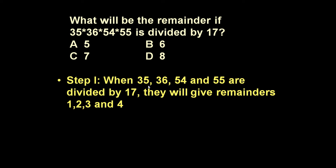When 35, 36, 54 and 55 are divided by 17 they will give remainders equal to 1, 2, 3 and 4. When 35 is divided by 17, remainder is 1. When 36 is divided by 17, remainder is 2. When 54 is divided by 17, remainder is 3. And when 55 is divided by 17, remainder is 4. This is step 1.